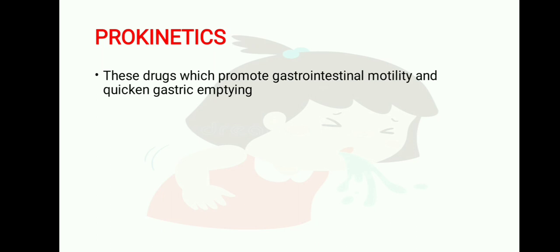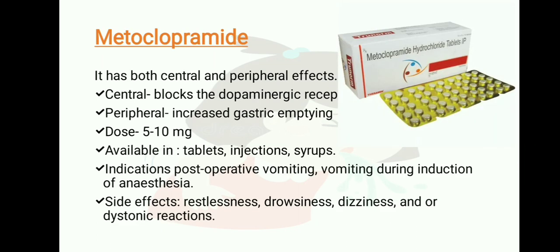Prokinetics are drugs which promote gastrointestinal motility and quicken gastric emptying. The first drug is metoclopramide, which has both central and peripheral effects. Central effect: blocks dopamine receptors. Peripheral effect: increases gastric emptying. Dose: 5 to 10 mg; available in tablet, injection, and syrup form.